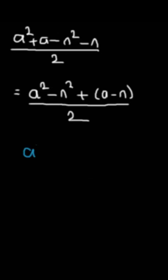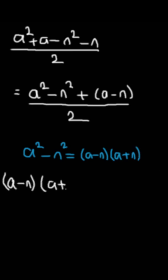According to the difference of squares, we know that A to the second power minus N to the second power equals A minus N multiplied by A plus N. Now, our expression became something like A minus N times A plus N plus A minus N divided by 2.